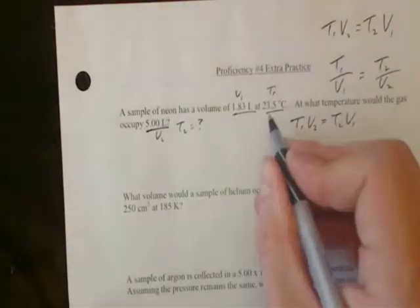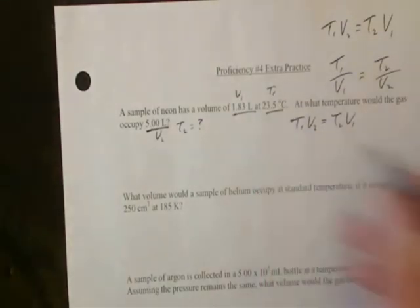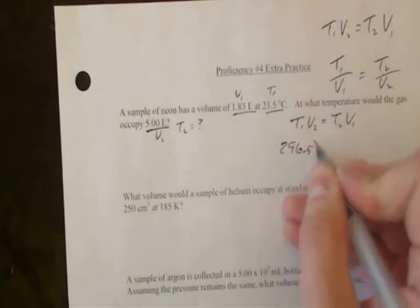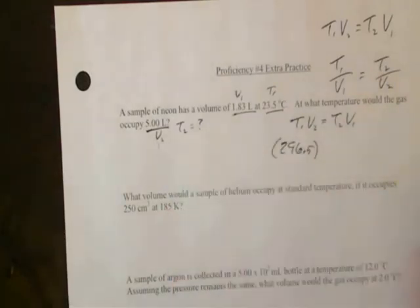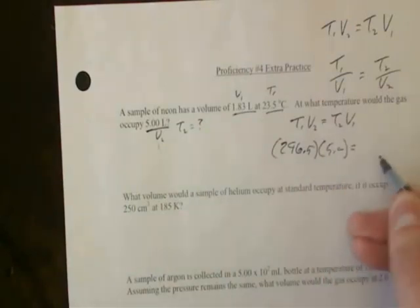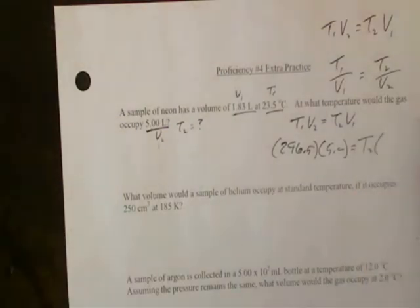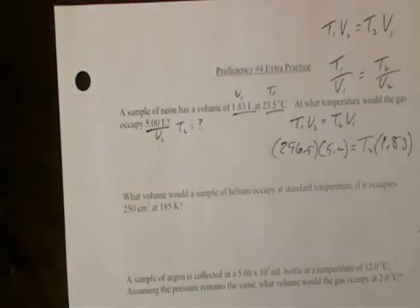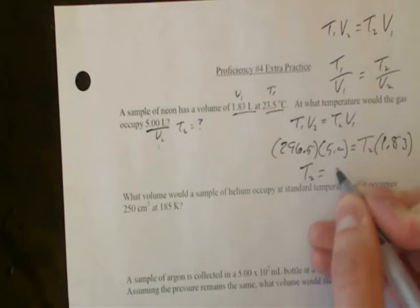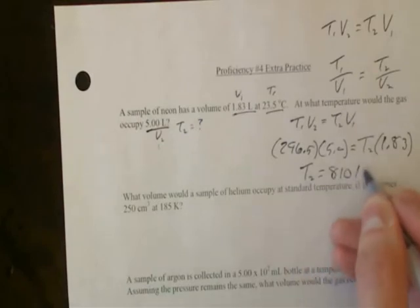T1 is 23.5, but remember you need to add 273 to convert it to Kelvin, so that'll be 296.5. Multiply by V2, which is 5, and that equals T2 — what we're solving for — times V1, which is 1.83. Do the algebra and you'll get a T2 of about 810 Kelvin.